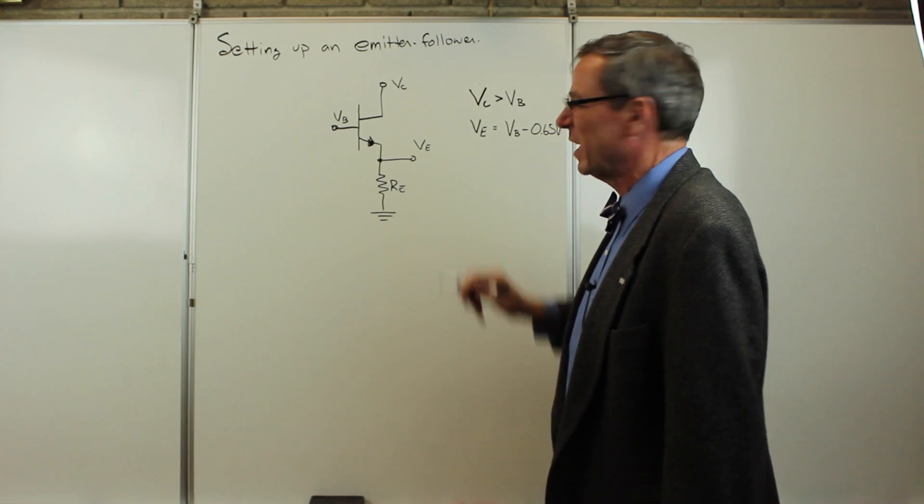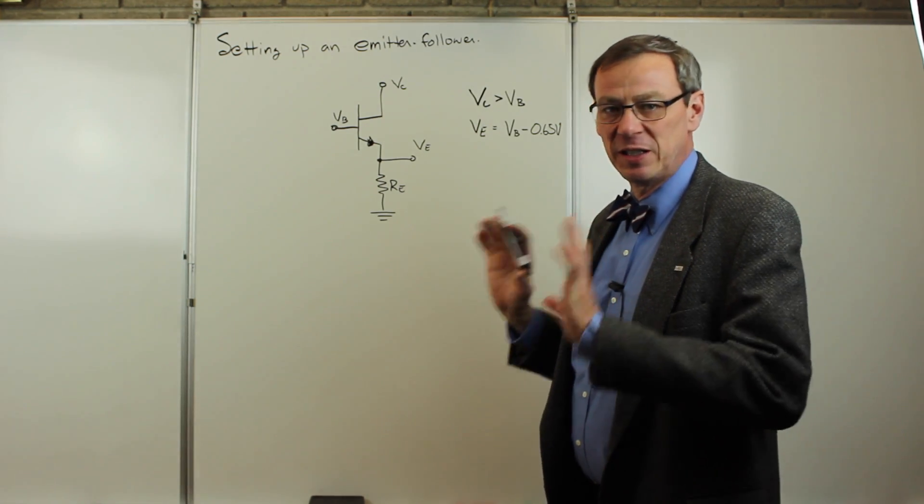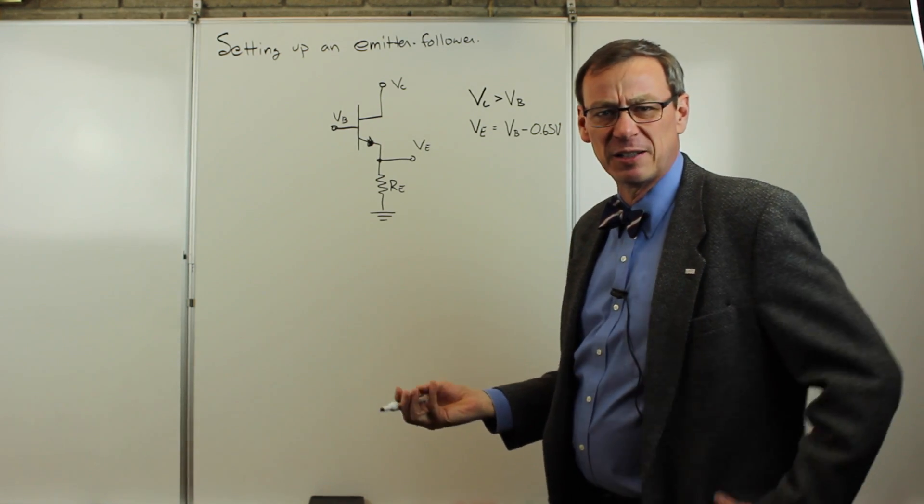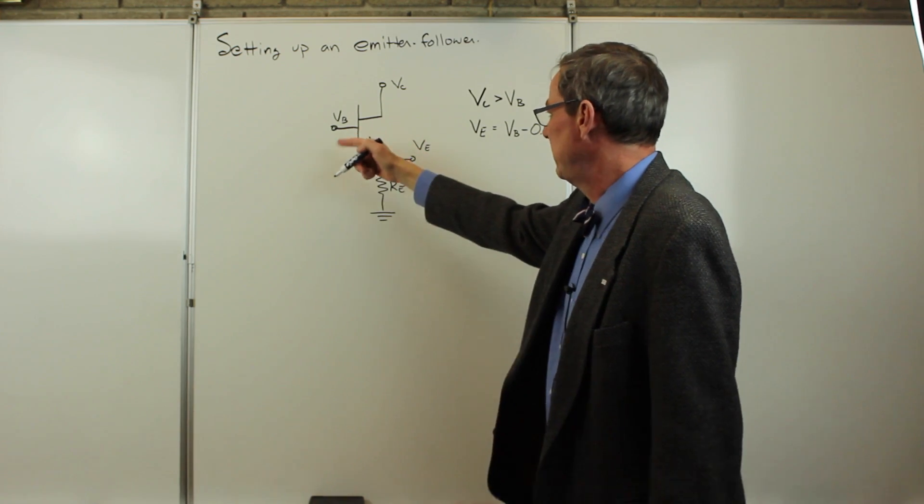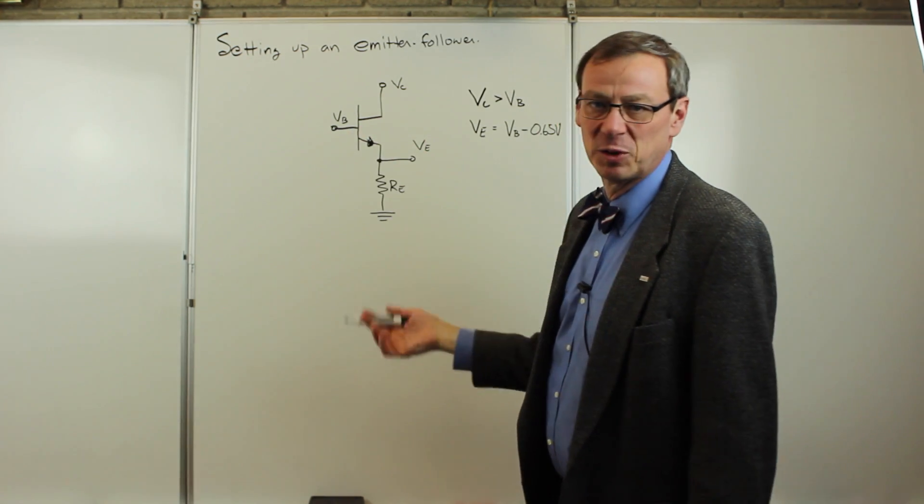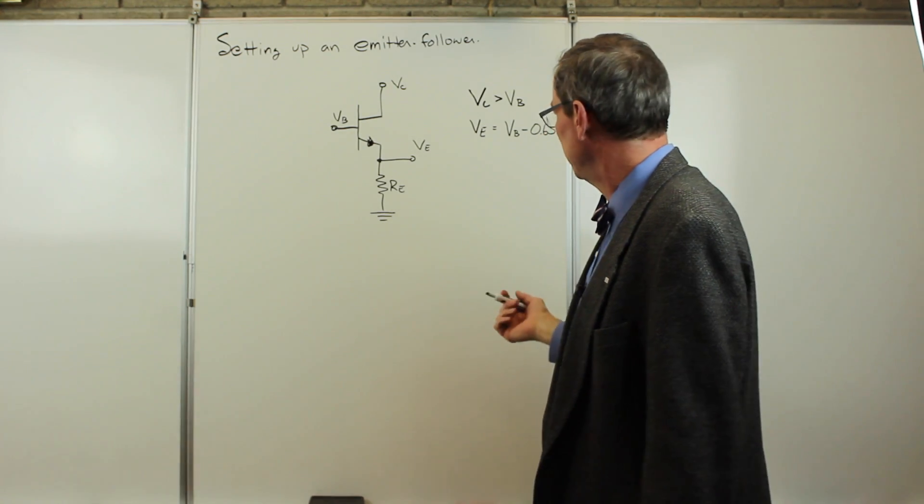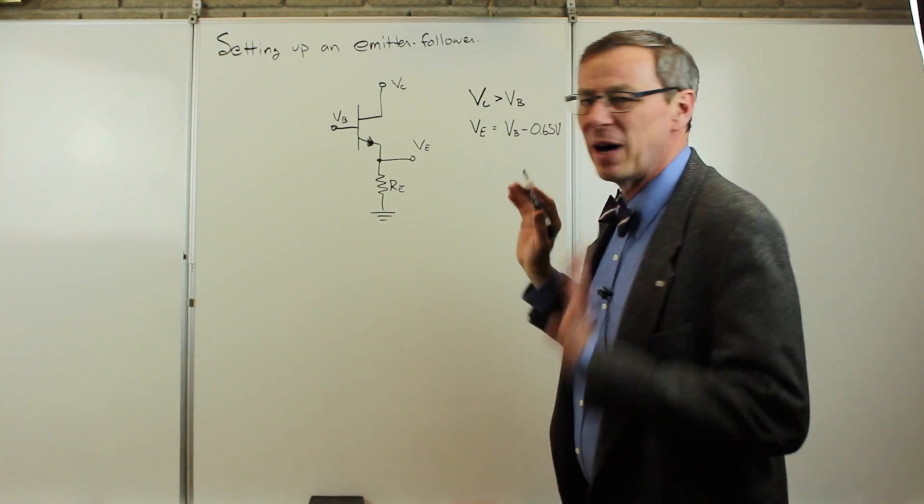Today we're going to talk about how to set up an emitter follower circuit to function as discussed in the last lecture. Basically, the AC signal output is a copy of the input, with large input impedance, small output impedance, and the key thing is to bias this.